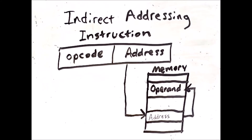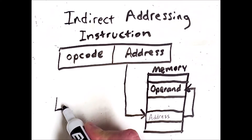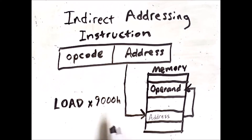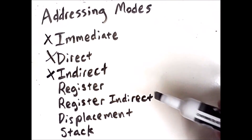The x86 assembly language does not support indirect addressing specifically, but we can imagine instructions that would use this type of addressing. For example, we could have a load instruction as with direct addressing, but in this case instead of loading the contents of address 9000 hex directly, we would go to that address and then follow whatever its contents are to the other location.